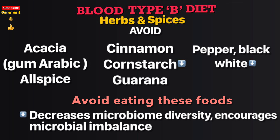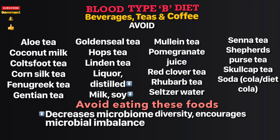Herbs and spices to avoid: acacia gum (arabic), allspice, cinnamon, cornstarch, guarana, and black and white pepper. Beverages, teas, and coffee to avoid: aloe tea, coconut milk, carob fruit tea, corn silk tea, fenugreek tea, gentian tea, goldenseal tea, hops tea, linden tea, distilled liquor, soy milk, mullein tea, and pomegranate juice.